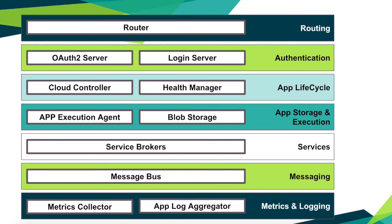Then we have the log aggregator. The log aggregator continuously streams application logs to developers. In Pivotal Cloud Foundry, you can view the application log directly in the UI. Then we have the metrics collector. The metrics collector gathers metrics and statistics from different components and makes it available for the developer.